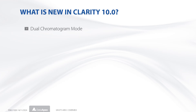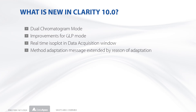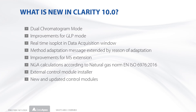We have introduced the dual chromatogram mode for higher sample throughput. Several changes to improve the GLP mode. A real-time isoplot view is available in the data acquisition window for the PDA extension. The method adaptation message now provides additional information. Several improvements have been done in the MS extension, including NGA calculation according to a new norm. An external control module installer is available, and new and updated control modules are implemented.